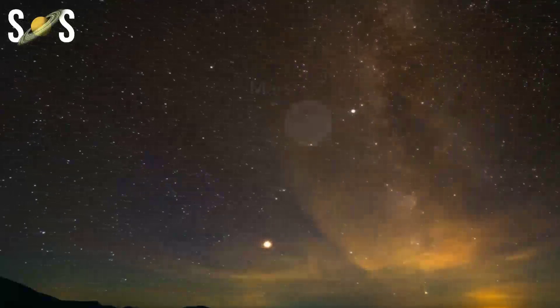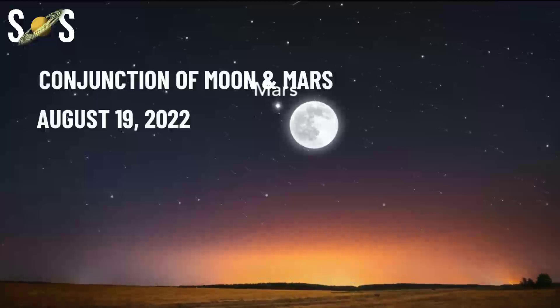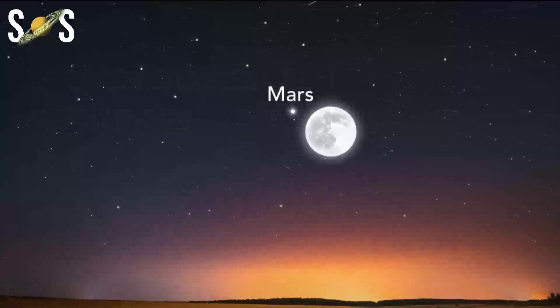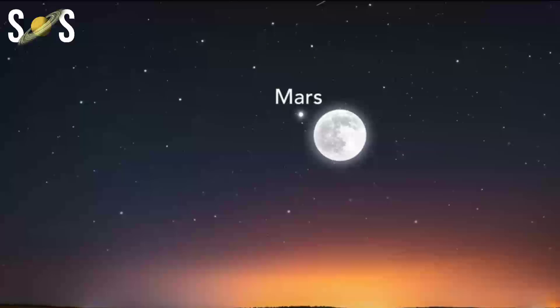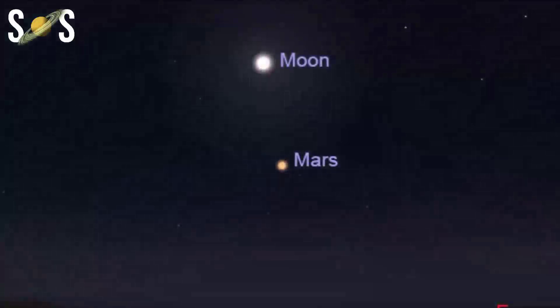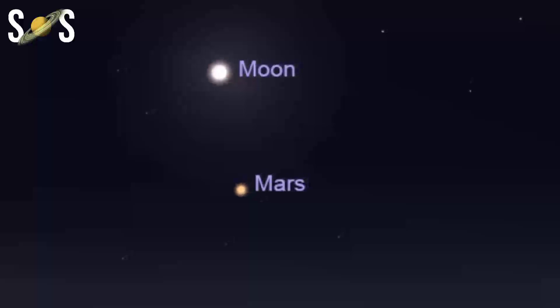August 19th: conjunction of the moon and Mars. Rounding out the series of planetary conjunctions this month, the moon and Mars will appear close in the sky on the morning of August 19th. On this day, the moon is close to its third quarter phase and will be great if you want to pull out a telescope or binoculars to observe the terminator as well as Mars a bit more closely. At their closest, the two will appear 2 degrees 41 arc minutes apart in the constellation Taurus.